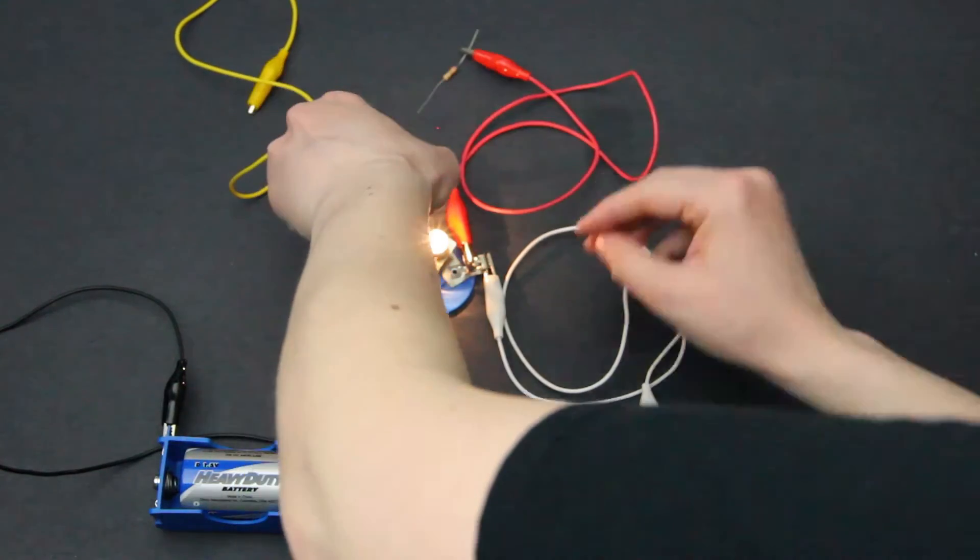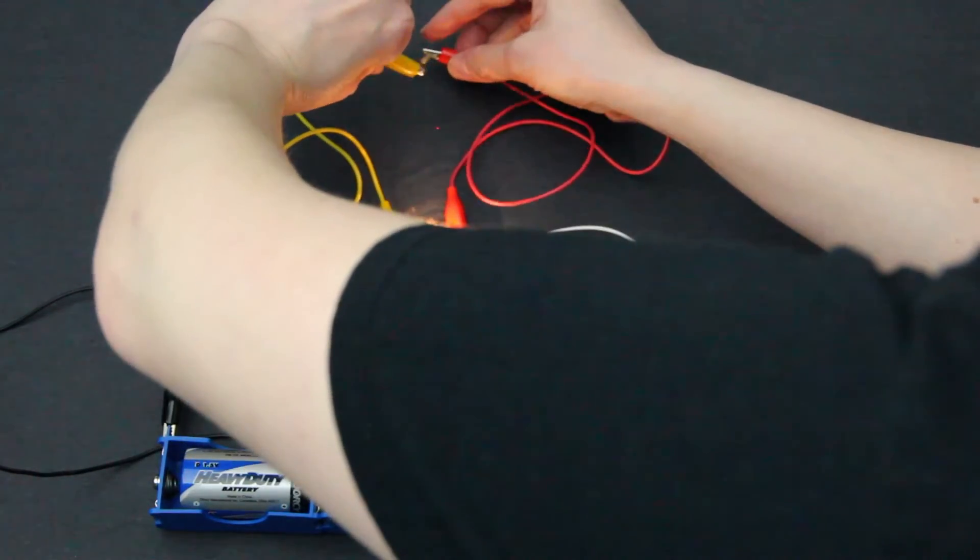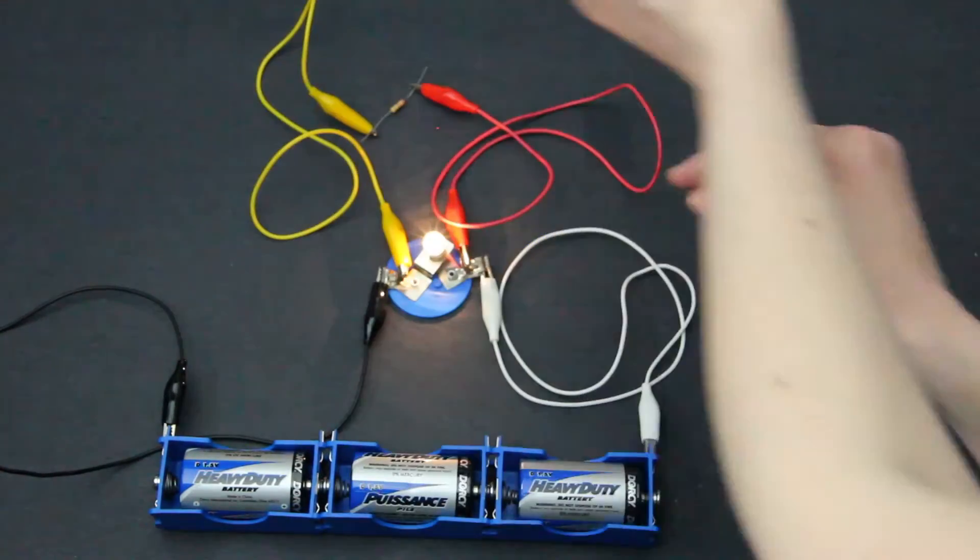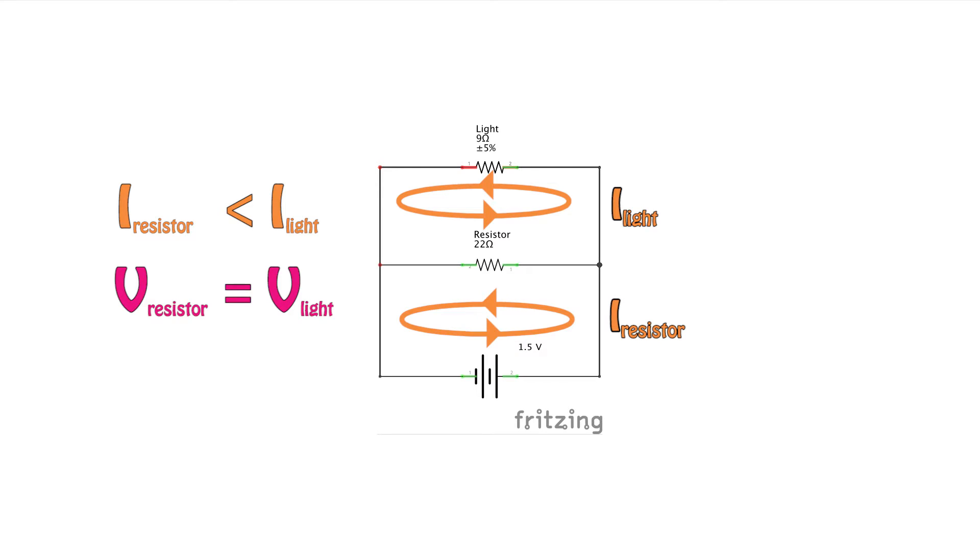If we want to change the current across the component, we need to use a parallel circuit. By putting the light and resistor in parallel, the voltage across them will be the same, but the current is going to be different. Current likes to take the path of least resistance, which is why the light has more current than the resistor does.